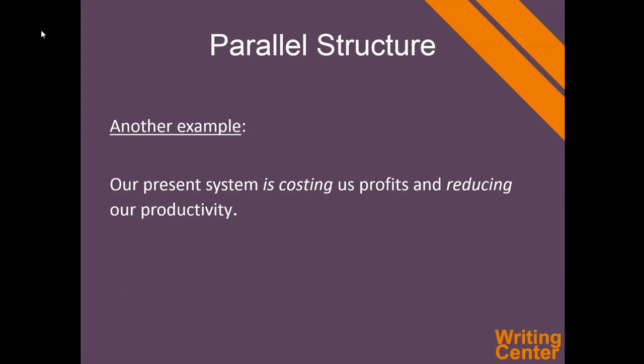Another example is: 'Our present system is costing us profits and reducing our productivity.' 'Is costing' and 'reducing' are structured in a parallel way. I often see something like 'our present system costs us profits and is reducing our productivity,' which isn't necessarily wrong, but it doesn't flow as easily. You could say 'is costing and reducing,' or 'costs and reduces' — parallel structured verbs in either case.